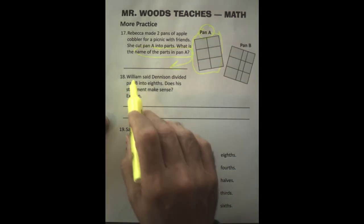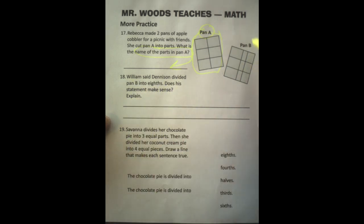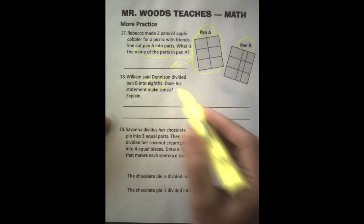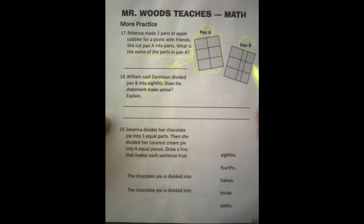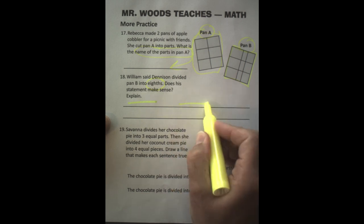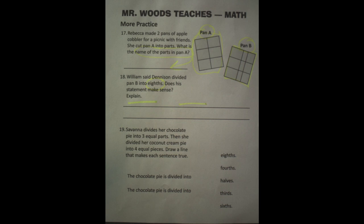William said Denison divided pan B into eighths. So he has eighths. Does this statement make sense? So take a look at this pan here, and you need to say if it makes sense or not, and explain why it does or does not make sense. You have a couple of lines there.